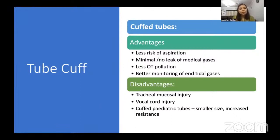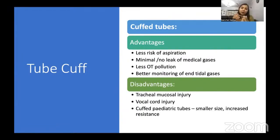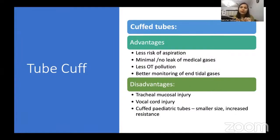Disadvantages of cuffed tubes: the cuff surface is rough, so chances of injury are more — especially during nasal intubation. There can be tracheal mucosal injury if the cuff is overinflated, and vocal cord injury if the cuff is at the level of the vocal cords and inflation occurs there. Cuffed pediatric tubes have a smaller lumen — since the narrowest part in pediatrics is subglottic, a cuffed tube increases airway resistance.